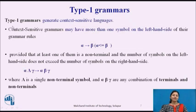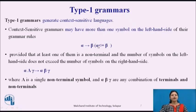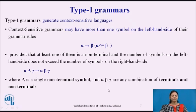Next is Type 1 grammar. Type 1 grammar generates context-sensitive languages. Context-sensitive grammars may have more than one symbol on the left-hand side of their grammar rules. The condition is that alpha must be less than or equal to beta, meaning the left-hand side should be less than or equal to the right-hand side. The production format is: alpha A gamma → alpha beta gamma, where A is a single non-terminal symbol and alpha, beta, gamma are any combination of terminals and non-terminals.